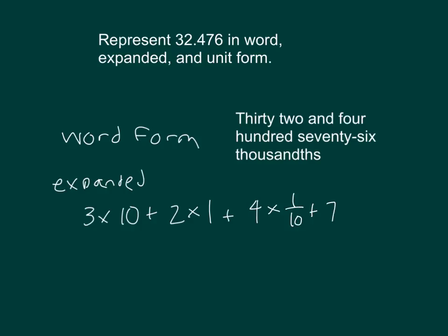plus 7 times a hundredth, and then finally, plus 6 times a thousandth. So that there is our expanded form.